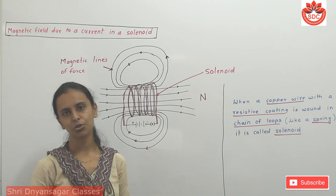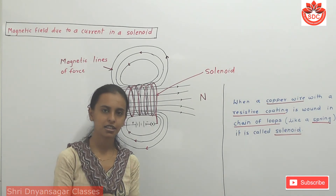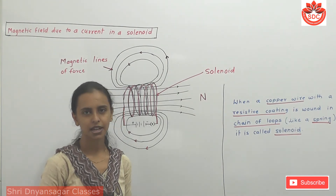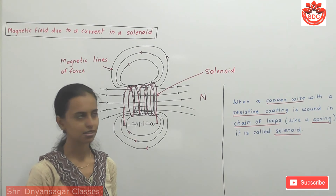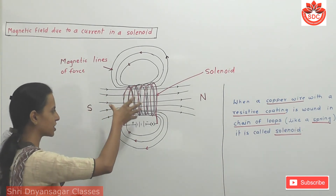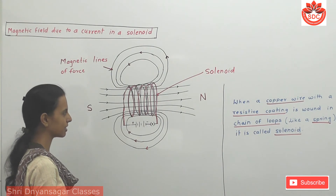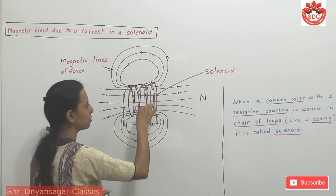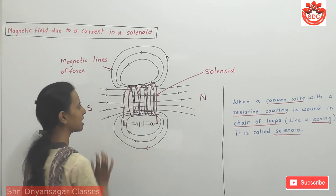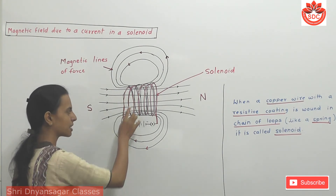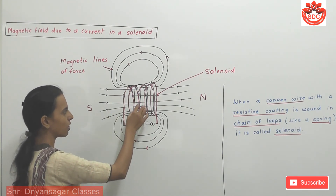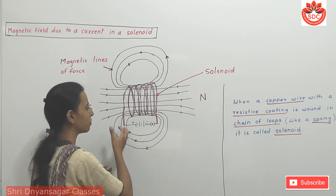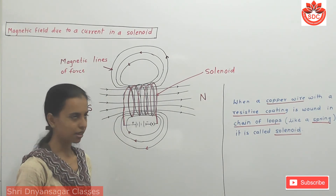We apply the right hand thumb rule to the current-carrying conductor. For one loop, the direction of the magnetic field corresponds to the current direction. There are multiple loops in the solenoid, and at every point a magnetic field is produced. The current path is uniform, so the magnetic field produced is also uniform.